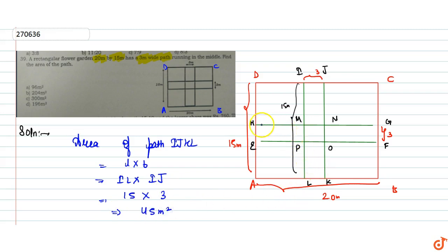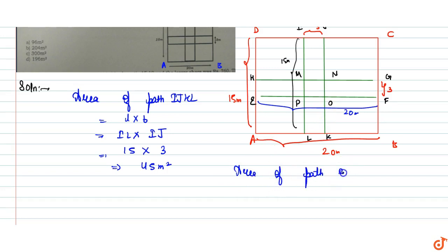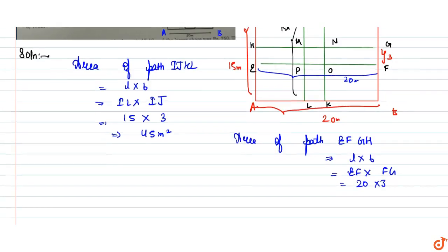Similarly, if we take the path area EFGH, the length EF is 20 meters and the width is 3 meters. So the area of path EFGH is equal to length into breadth, that is EF into FG, which equals 20 into 3, giving a value of 60 meters squared.